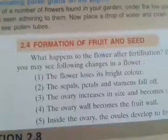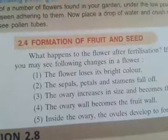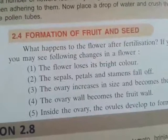Now coming to the formation of fruit and seed — what happens to the flower after fertilization? You may observe the following changes: the flower loses its bright color; the sepals, petals, and stamens fall off; the ovary increases in size and becomes the fruit; the ovary wall becomes the fruit wall; and inside the ovary, the ovules develop to form the seeds.